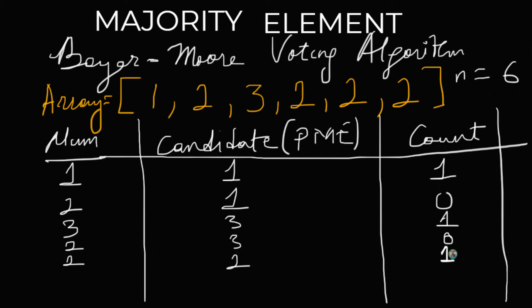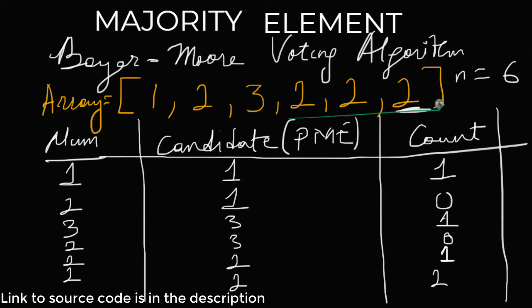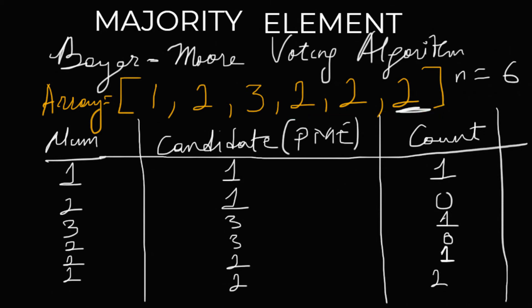Now we get to the last 2. Our current number is 2, our candidate is still 2, and since 2 equals the candidate we increment the counter — it becomes 2. We're done iterating through the array. We just return the current candidate, which is 2, and that's the majority element. The core of this algorithm relies on the fact that the majority element appears more than n/2 times. Here n is 6, and 2 appears 4 times, which is greater than 3.